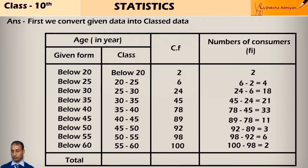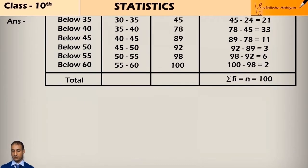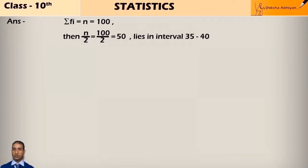So sigma fi equals n equals 100. Now n by 2 equals 100 by 2 equals 50, which lies in interval 35 to 40. So median class is 35 to 40. So l equals 35, n equals 100, f equals 33.